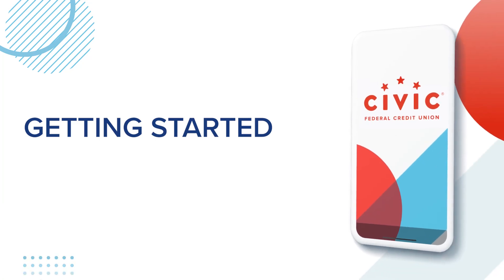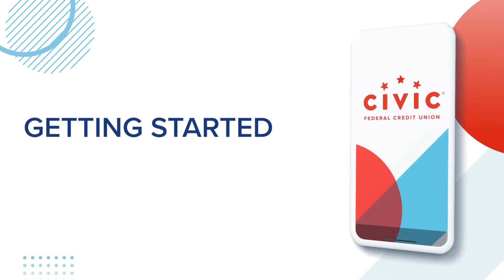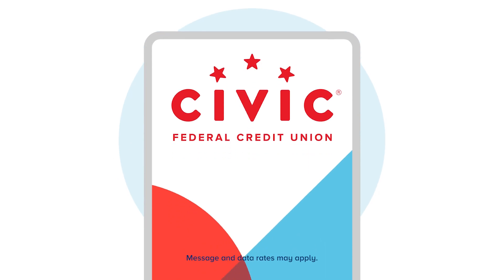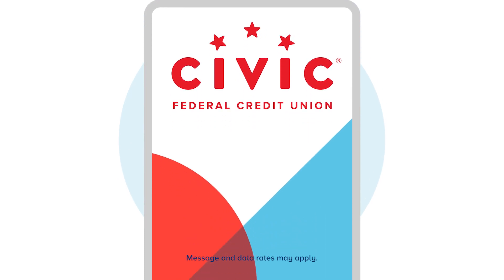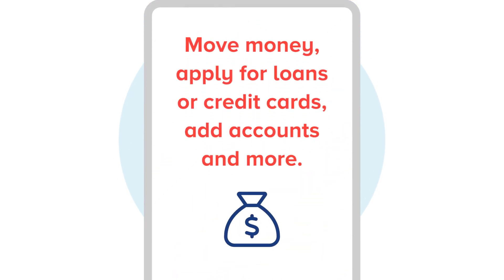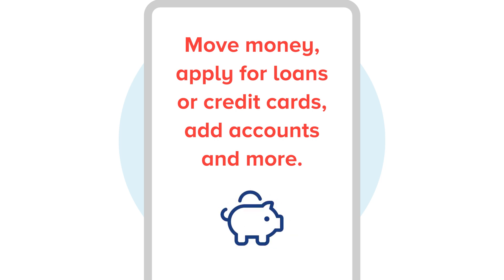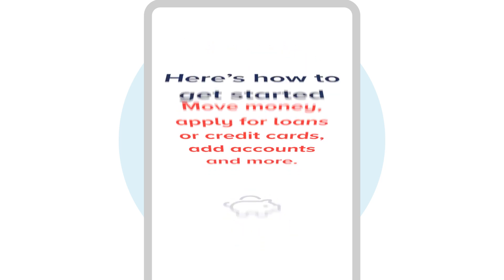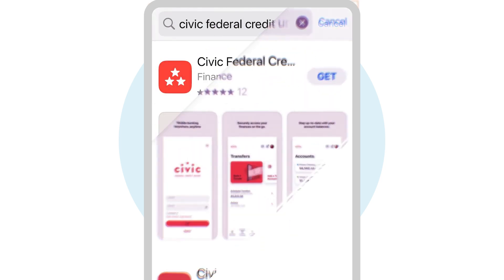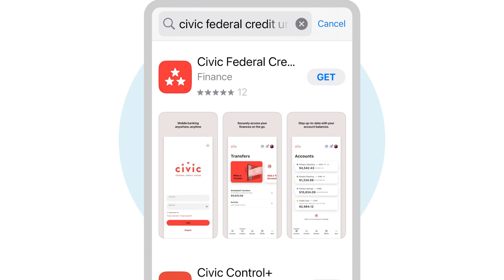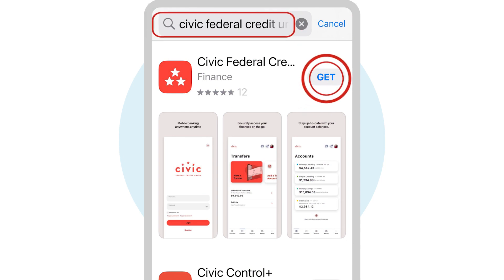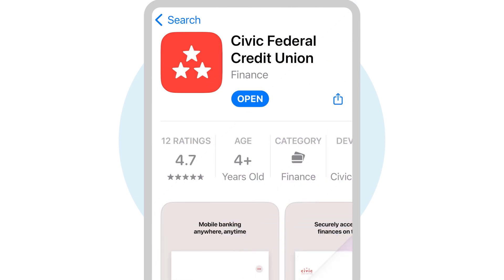Ready to access your Civic accounts quickly and conveniently? Just download the Civic mobile app on your smartphone. The app makes it easy to move money, apply for loans or credit cards, add accounts, and more. Here's how to get started. Visit the App Store or the Google Play Store to search for and download the Civic Federal Credit Union mobile app.